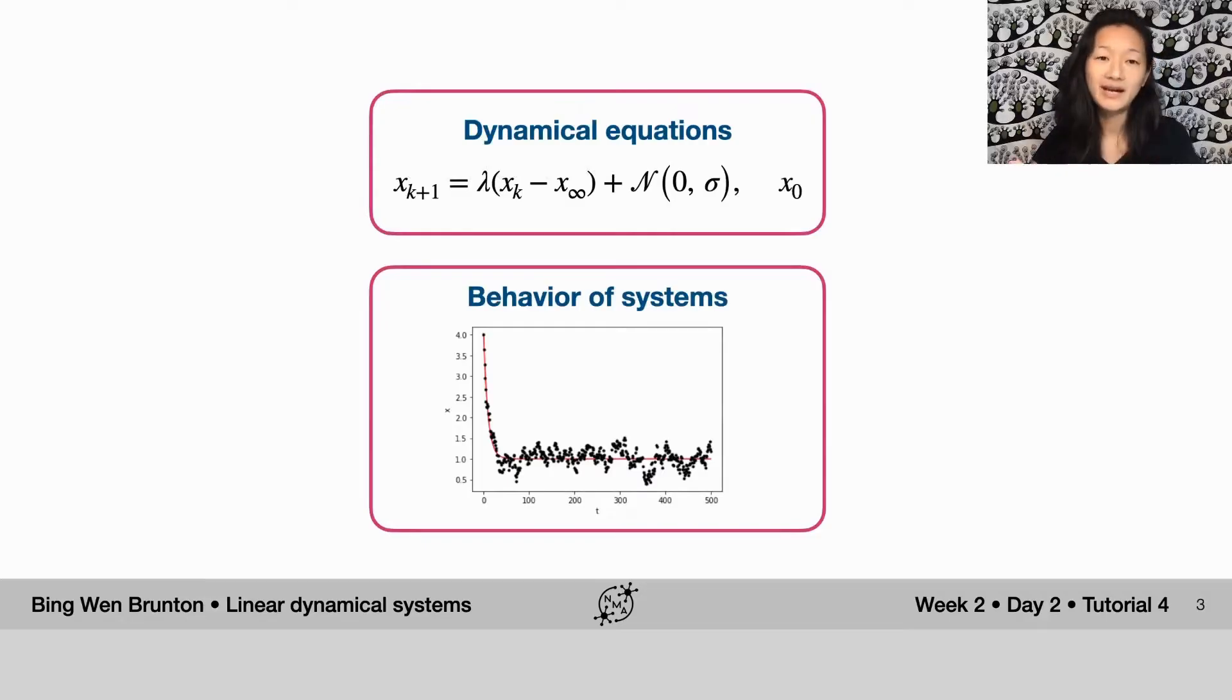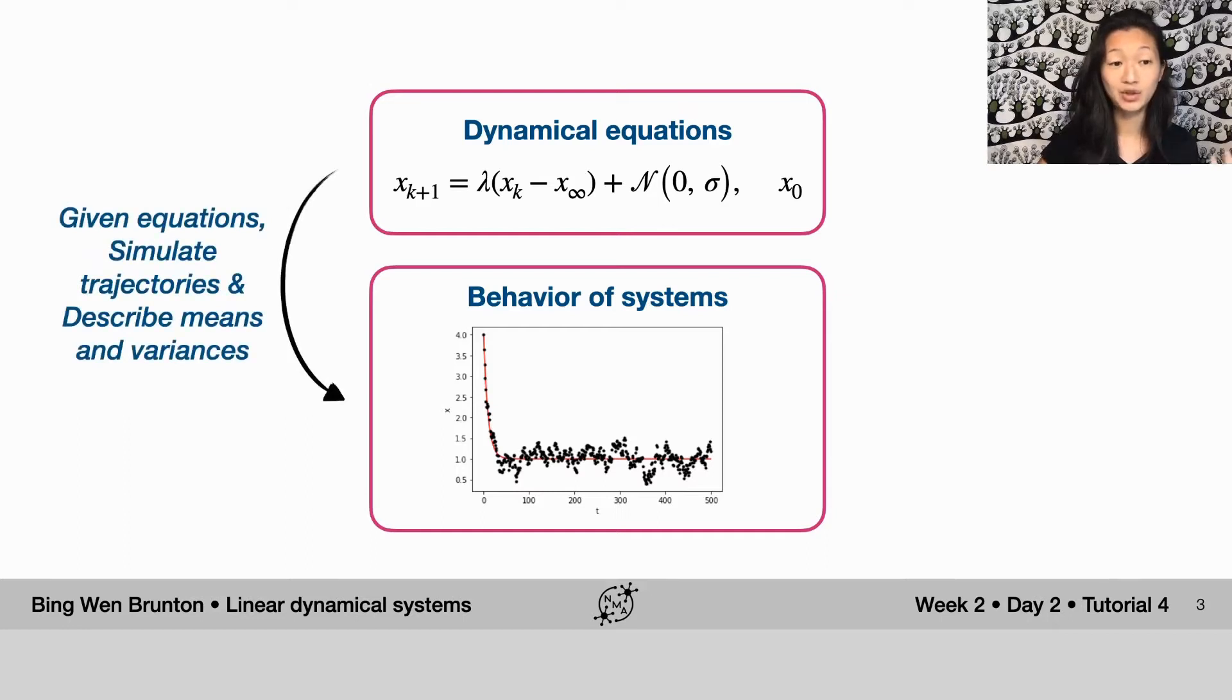I'm going to summarize what we've been doing for tutorials 1 through 3. We looked at different types of dynamical equations - governing equations that tell us what happens in time as the state of the system goes from one step to the next. We simulated and looked at the behavior of these systems by describing their trajectories in time and by looking at how their means and variances change. This is great for building intuitions of the kinds of behaviors that you can possibly get out of these types of equations.